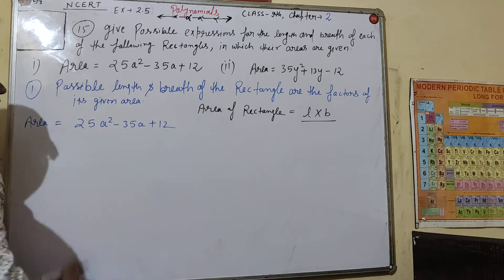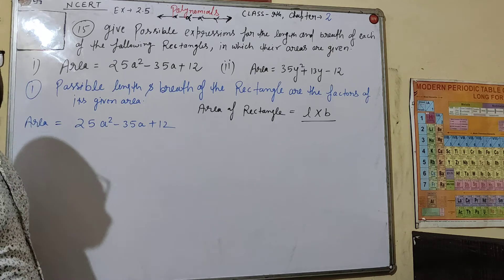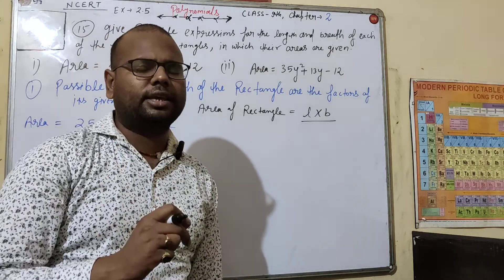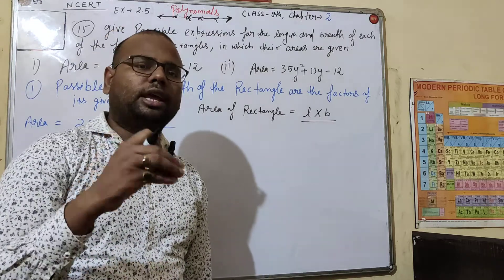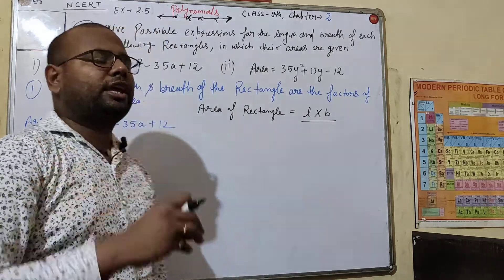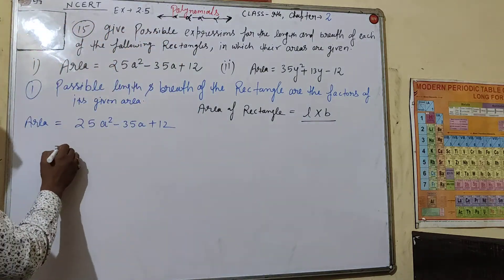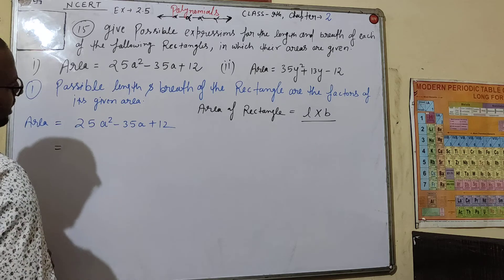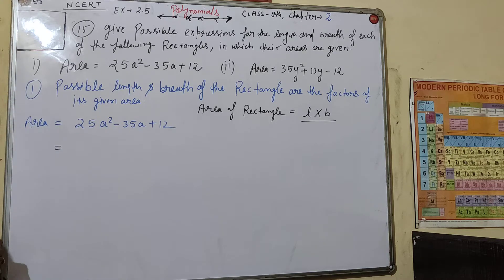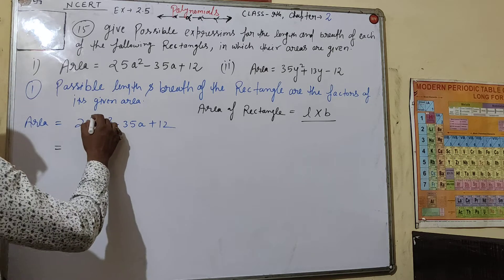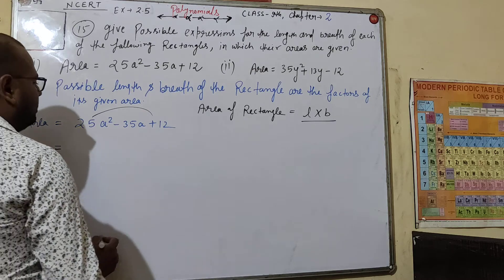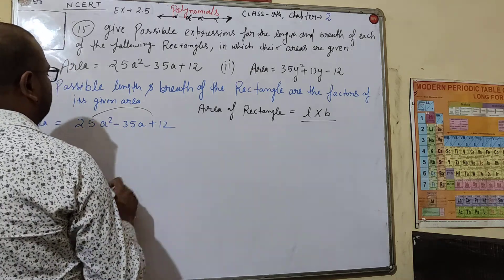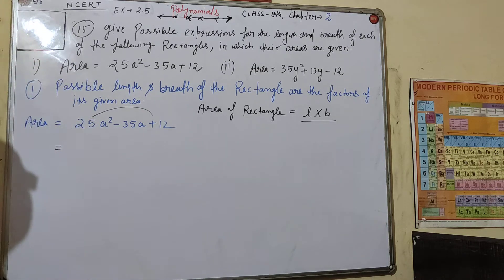If I factor this expression, I will take two things in the required form. When we take two things, one is length and the other is breadth. So we will factor this first. The first step is: we multiply the first number by the last number.